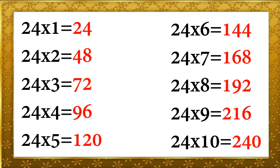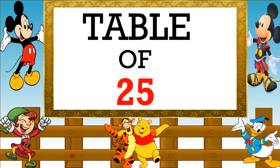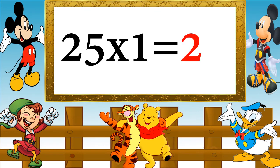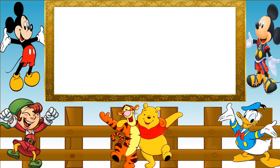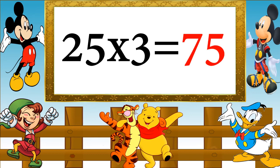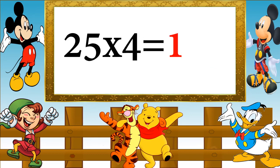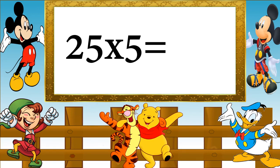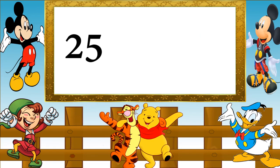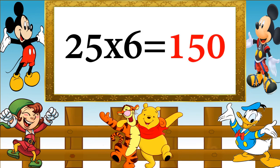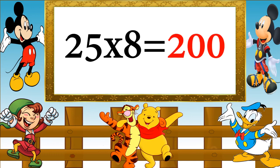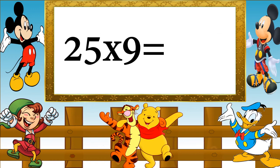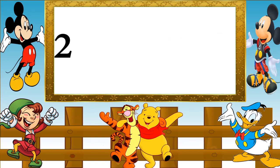Table of 25. 25 ones are 25, 25 twos are 50, 25 threes are 75, 25 fours are 100, 25 fives are 125, 25 sixes are 150, 25 sevens are 175, 25 eights are 200, 25 nines are 225, 25 tens are 250.